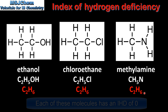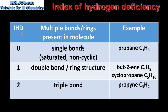So let's end with a summary. A value of 0 for the index of hydrogen deficiency means the molecule has single bonds — it's saturated and non-cyclic. An example is propane, which has carbon to carbon single bonds with a molecular formula of C3H8. A value of 1 for the index of hydrogen deficiency means the molecule has a double bond or a ring structure.